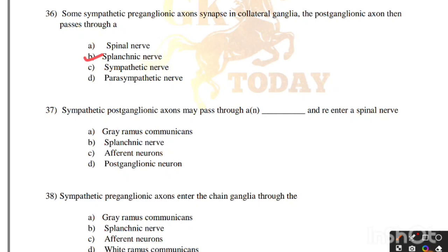Sympathetic postganglionic axons may pass through which structure and re-enter a spinal nerve? Options: gray ramus communicans, splanchnic nerve, afferent neurons, postganglionic neuron. Correct answer is option A, gray ramus communicans.